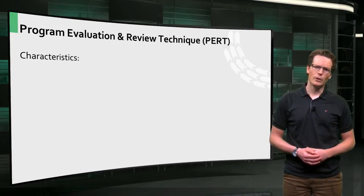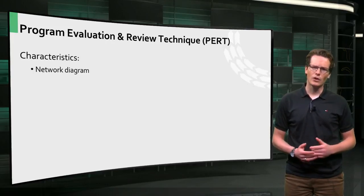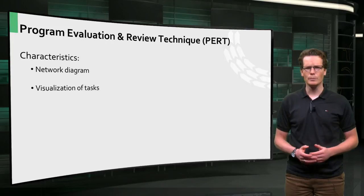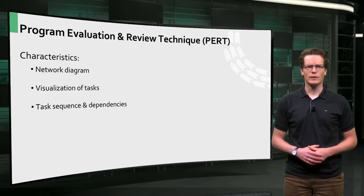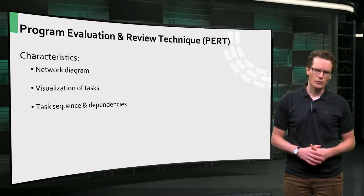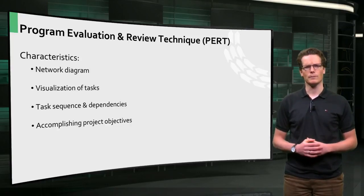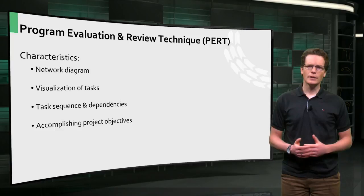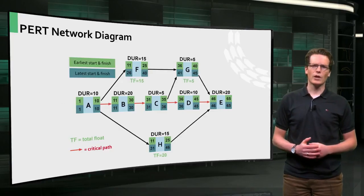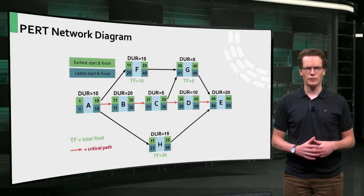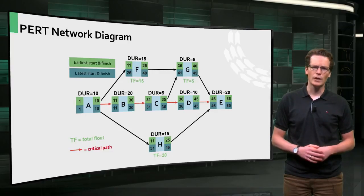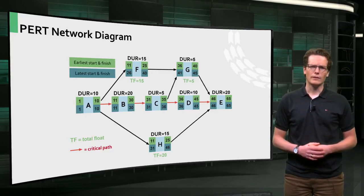The main feature of PERT analysis is a network diagram that provides a visual depiction of the sequence and dependencies of the project tasks which must be completed to accomplish the project objectives. Here you can see an example of such a network diagram. It shows the different tasks A to H that need to be performed and the time needed to complete each task.